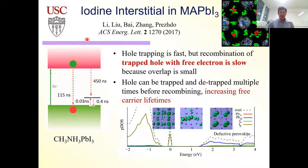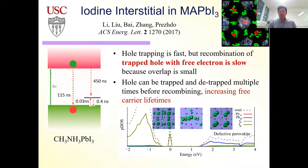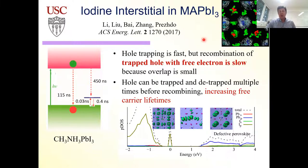Perovskites are a topic you can talk about endlessly — they're interesting not only for efficiency but because they have properties of inorganic semiconductors, organic species, and even liquids. You have an inorganic lattice — green is iodine, red is lead — and the organic methylammonium molecule in the middle rotates. The inorganic lattice supports charge conductivity much better than organic systems, but you also have this organic part that behaves almost like a liquid in terms of solvation. People draw analogies between hydrated or wet electrons and what happens with polarons in perovskites.